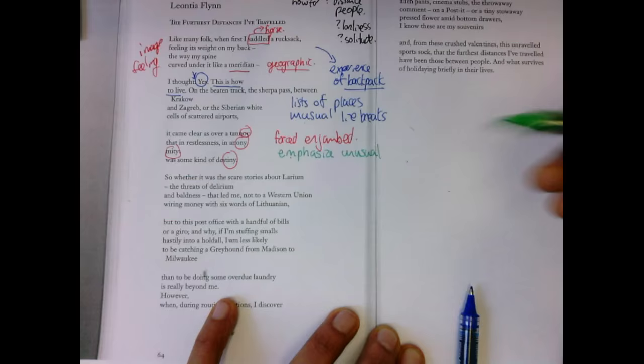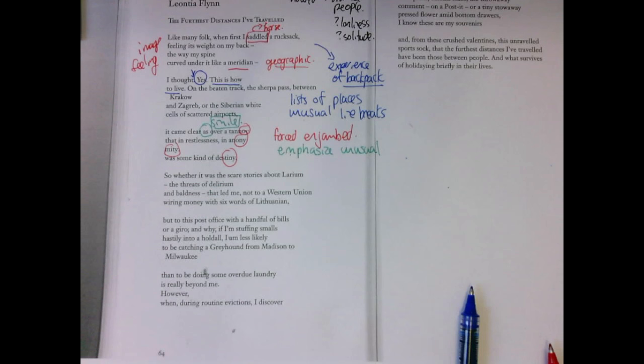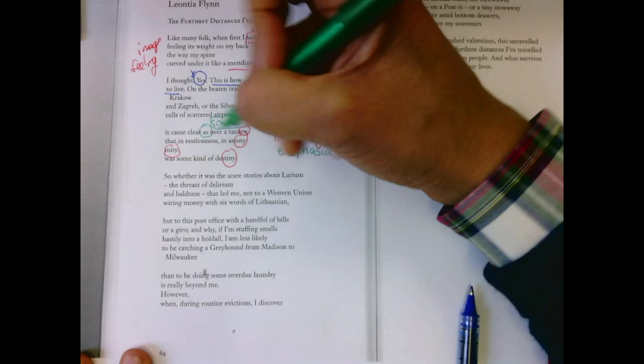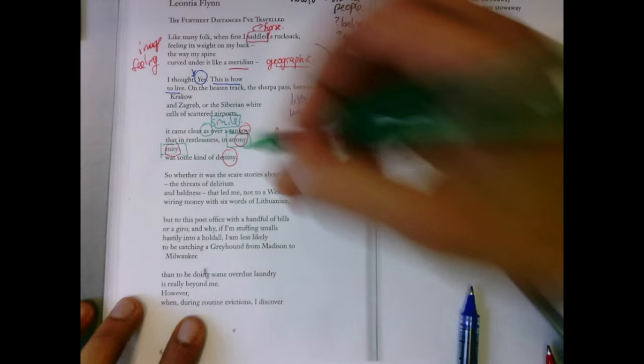It came clear as, this is a simile. It's as if it was being announced that this is your destiny. As if she was in an airport and it's like, now you're nobody. You're anonymous. You don't have to be anyone. And that itself is destiny.